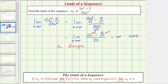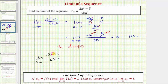Starting with the original limit again, we have the limit as n approaches infinity of the quantity two n cubed minus five, divided by 50 n squared. The shortcut method involves looking at the degree of the numerator and denominator. The numerator has degree three and the denominator has degree two.